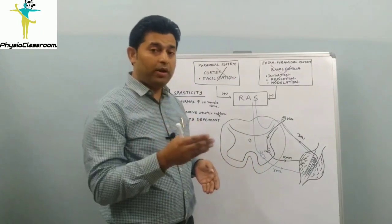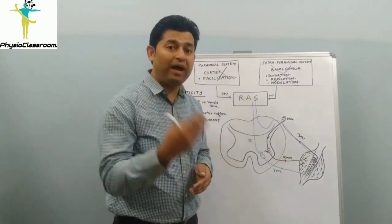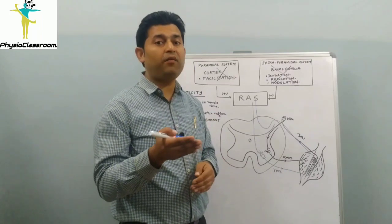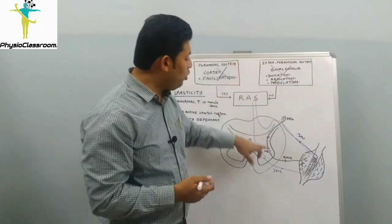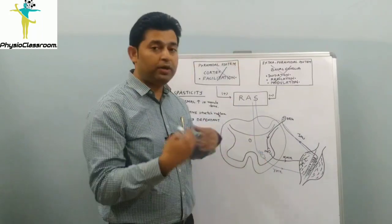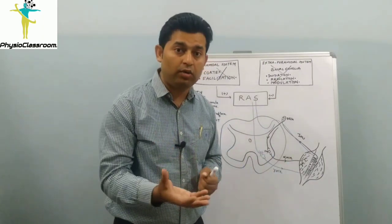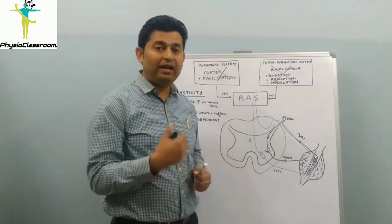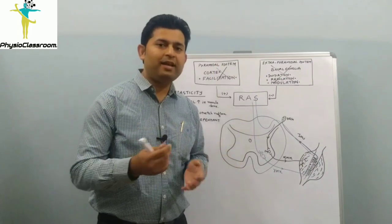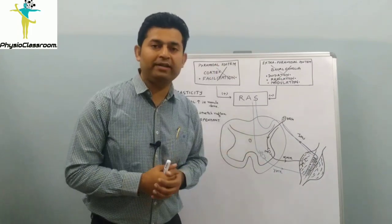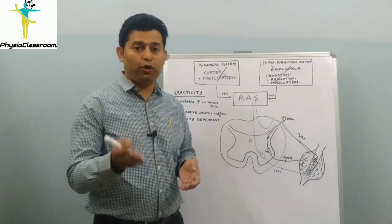Please note that I have not touched on descending motor control to the alpha motor neuron, because it is the gamma motor neuron's excessive firing that is actually the mechanism of spasticity development. Poor control over the alpha motor neuron is the reason for poor voluntary control — that is, the patient finding it difficult to produce a movement.